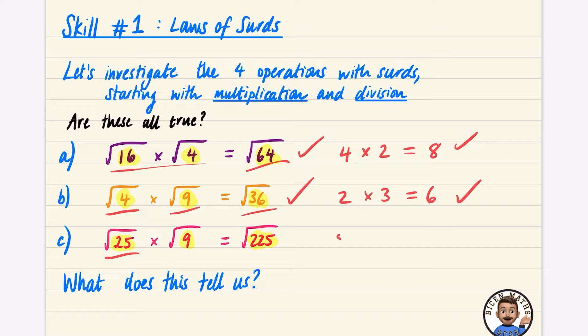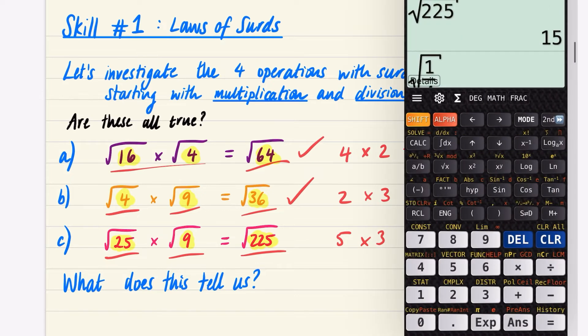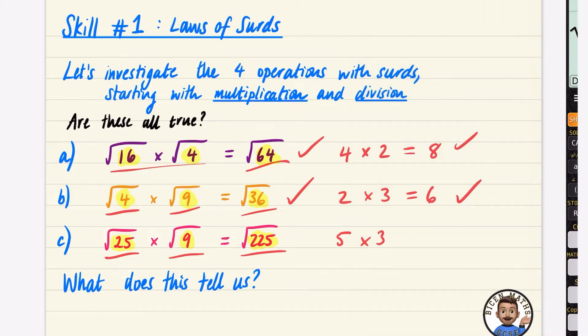The square root of 25 is 5, the square root of 9 is 3, and the square root of 225 is 15. Is 5 times 3 equal to 15? Yes, it is. So this one is true.